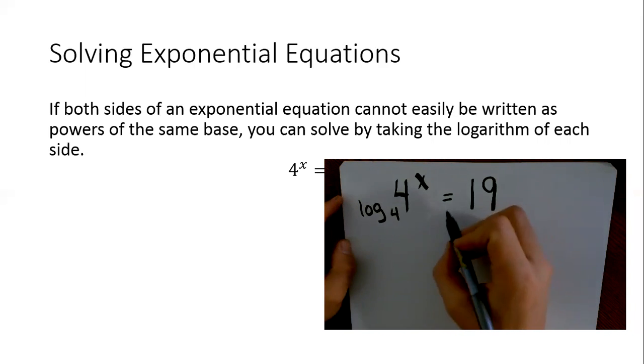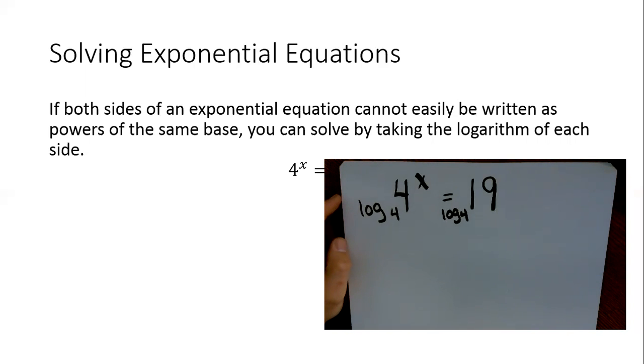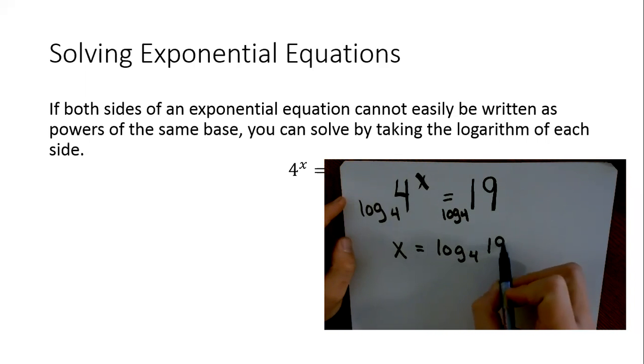Whatever I do to one side, I got to do to the other side. We know that log base 4 of 4 is just 1, cancels out. So I have X equals log base 4 of 19.